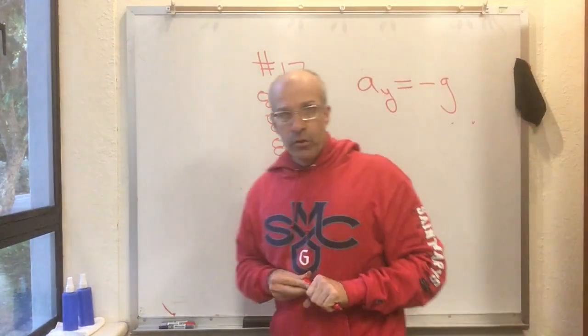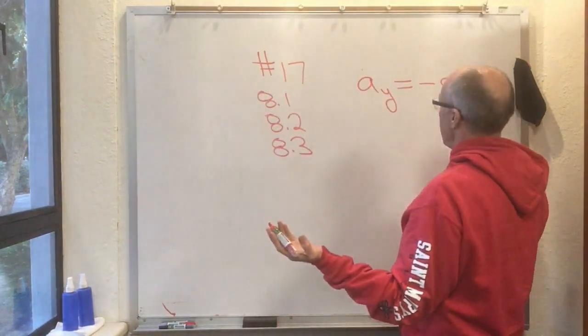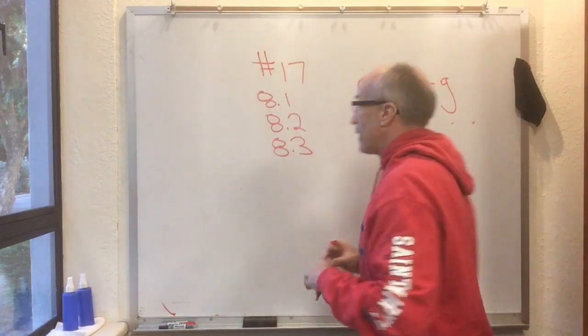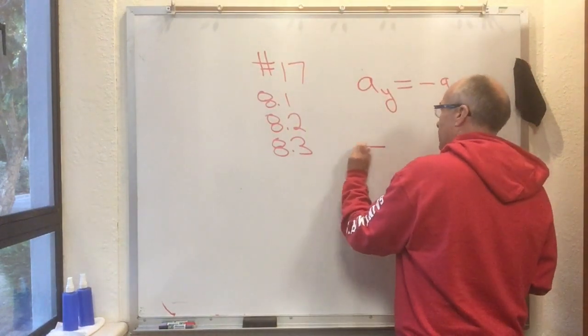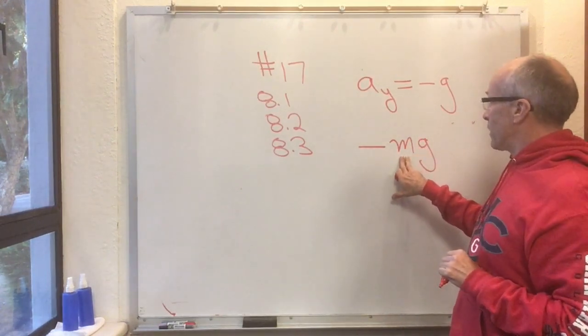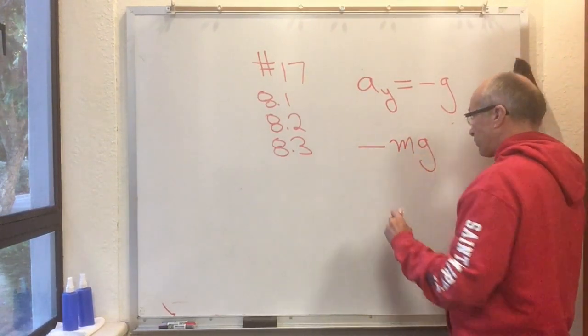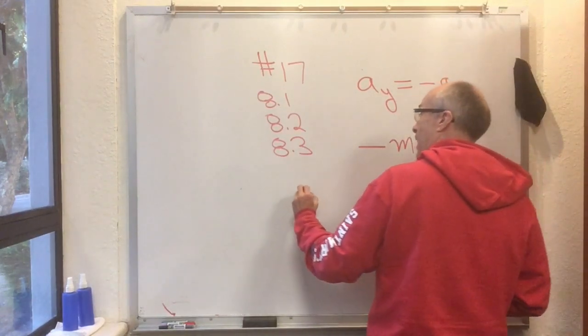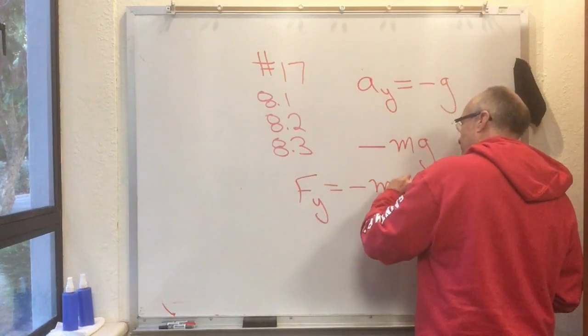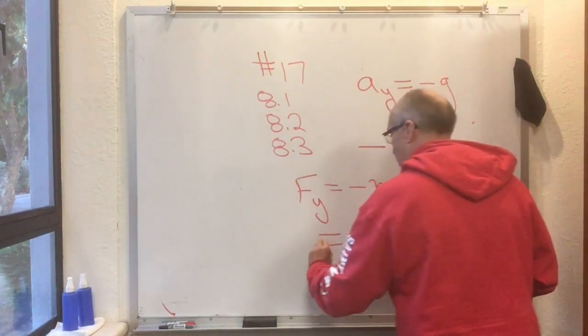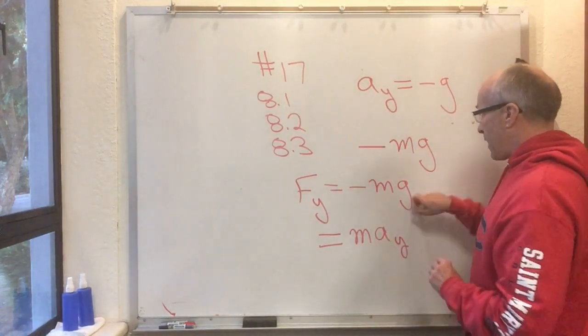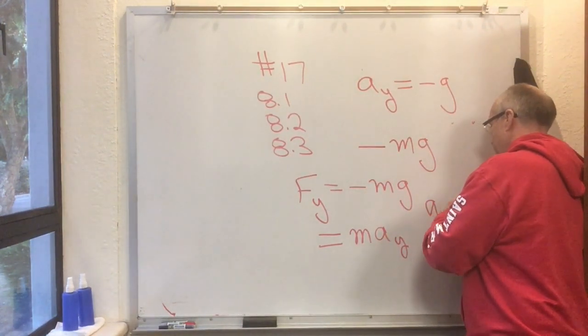But now you know Newton's Second Law, and this acceleration in the y direction must be caused by a force. That force is indeed minus m times g, where m is the mass of the object being acted on. So Fy equals minus mg, but Fy also equals ma_y, so a_y must be minus g.